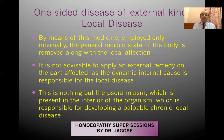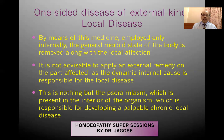By means of medicine employed only internally, the general morbid state of the body is removed along with the local affection. When you form the true totality, find the simillimum and give it internally, naturally the morbid state of the body will be removed along with the local affection. In local disease the cause lies internal, so if you annihilate the internal cause, automatically the reflection will be seen on the surface of the body and the local affection will also gradually reduce.